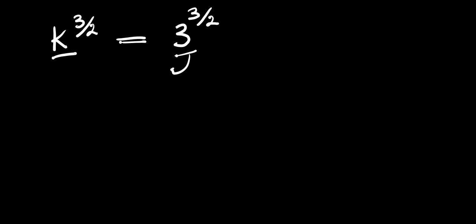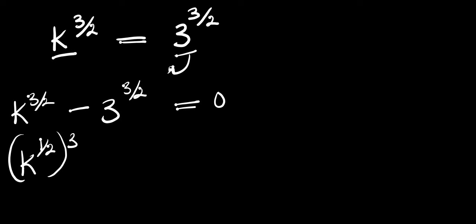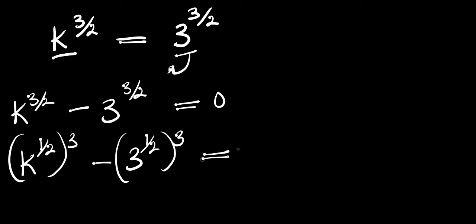We can take the right-hand side over to the left side of the equation. We now have k to the power 3/2 minus 3 to the power 3/2, and this equals 0. We can rewrite the exponent 3/2 as 1/2 raised to the power of 3, so we have k to the power 1/2 all raised to the power 3, minus 3 to the power 1/2 all raised to the power 3, equals 0.